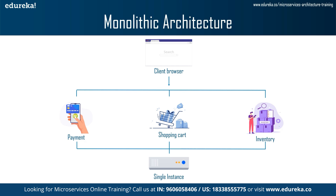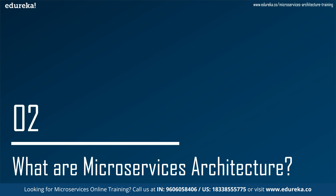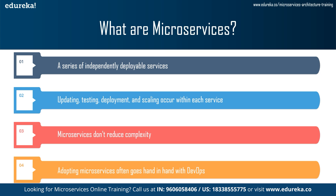A microservices architecture, also simply known as microservices, is an architectural method that relies on a series of independently deployable services. These services have their own business logic and database with a specific goal. Updating, testing, deployment, and scaling occur within each service. Microservices decouple major business domain-specific concerns into separate independent code bases.